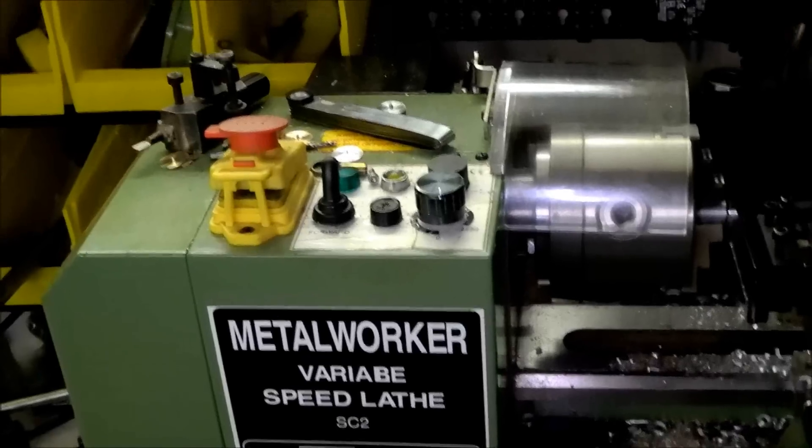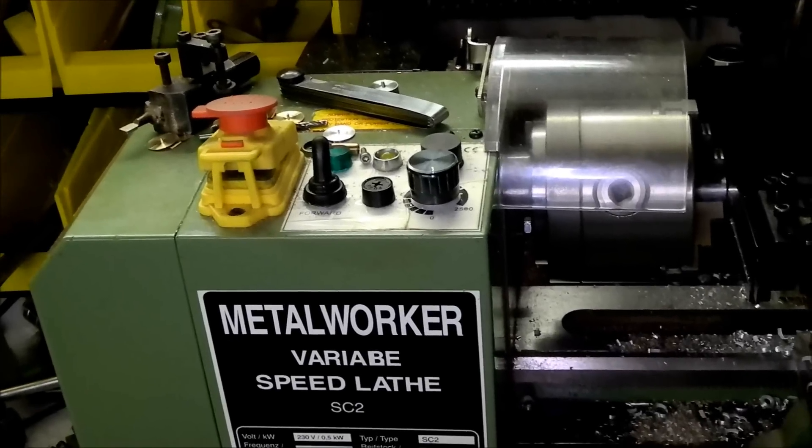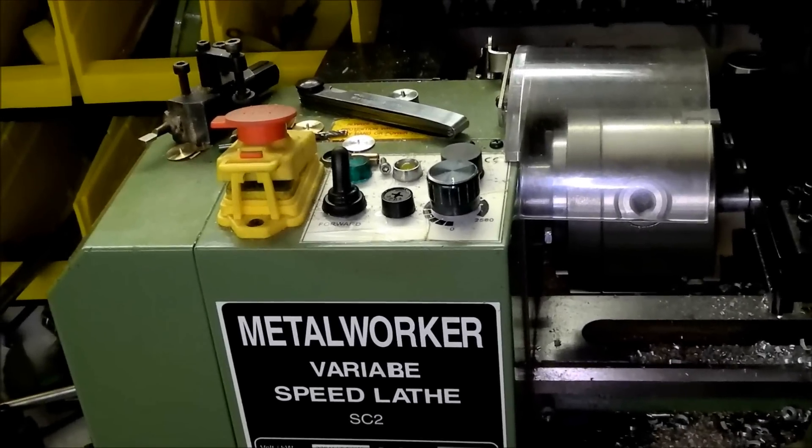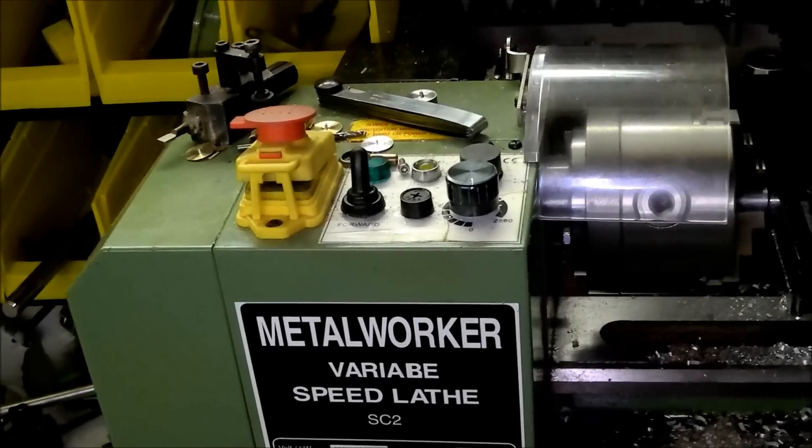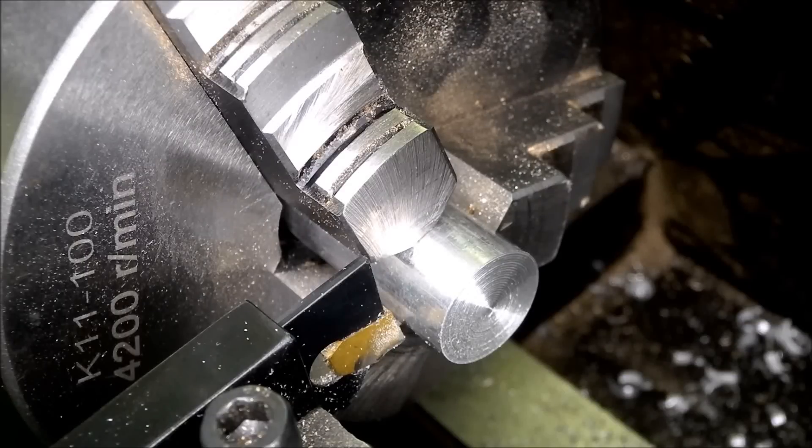But unfortunately the mini lathe isn't rigid at all. But with a simple trick you can cut off as fast as with a big lathe. This simple trick is to let the lathe run backwards and of course put the tool upside down into the tool holder.